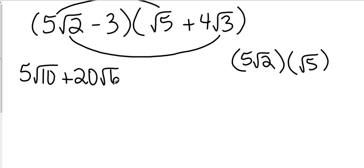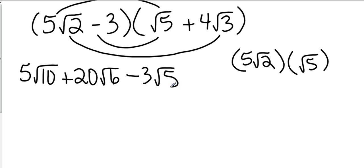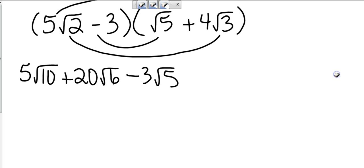Now I'm going to go to my inside terms. I notice I have one negative and one positive, so I'll bring down the negative sign. What is negative three times the square root of five? Negative three square roots of five. And then my last terms: what is negative three times four square roots of three? Negative twelve square roots of three.